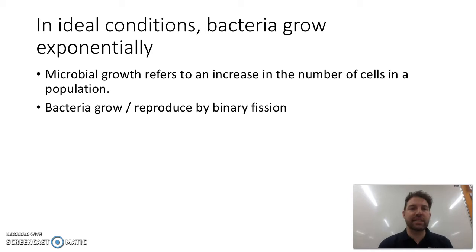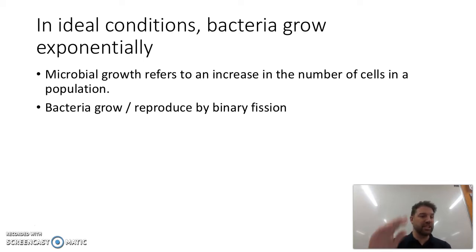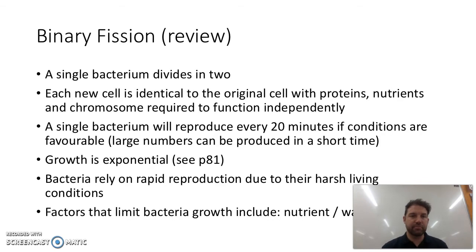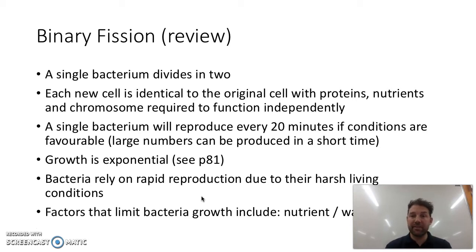On page 81, the text talks about how bacteria can grow really, really fast and exponentially. So 1 turns to 2 in about 20 minutes. After 40 minutes, that 2 is suddenly 4. After 60 minutes, that 4 is suddenly 8. You can see how it's exponential. They reproduce through binary fission — that's when one cell divides into two — and they're identical to the original cell.